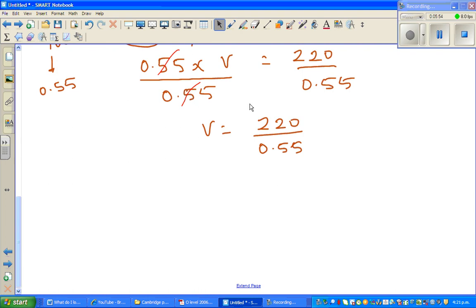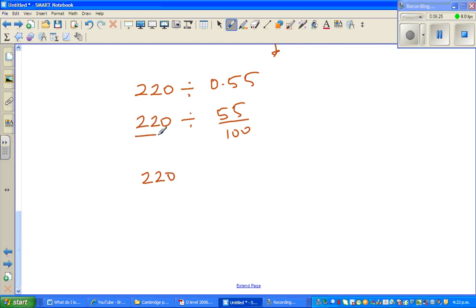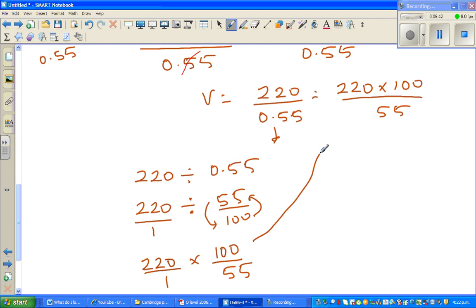Now, when you want to change the decimal into fractions, this can be written as 220 times 100 over 55. Now, how did this happen to explain that? This is 220 divided by 0.55. And this is 220 divided by 55 out of 100. So that is 220. I've explained this in the previous video. When you change the division into multiplication, you swap the number over. That is 100 over 55. So what happened is, this goes up and this comes down. That's how I wrote.